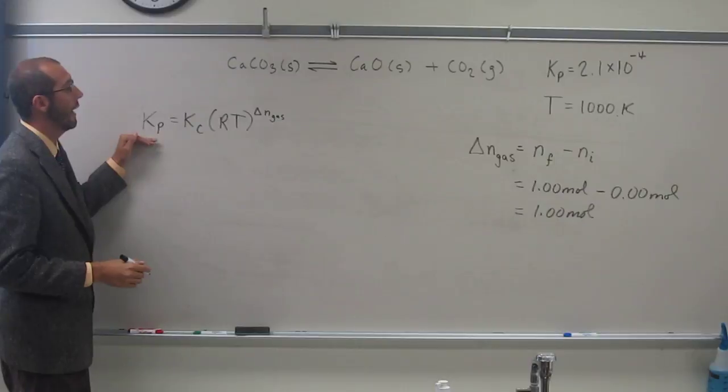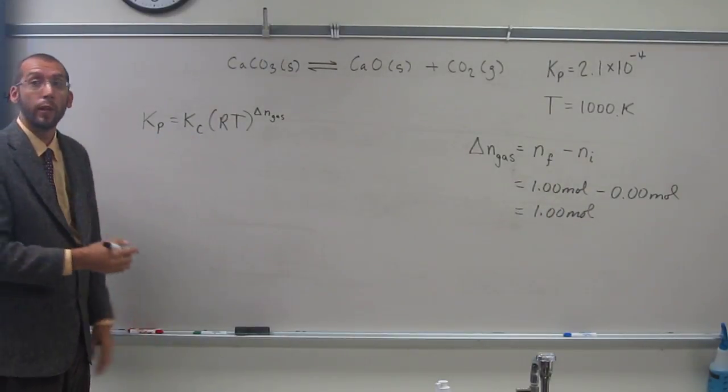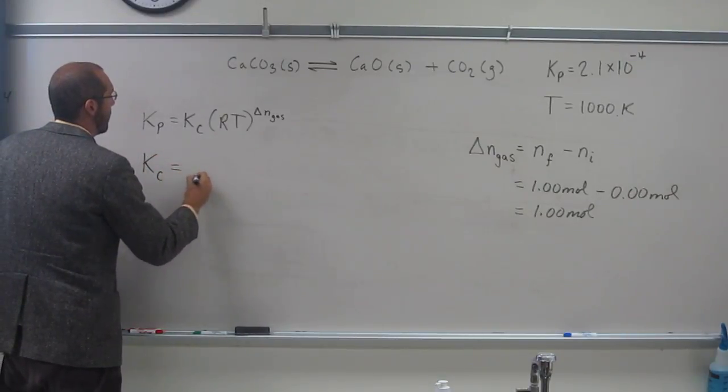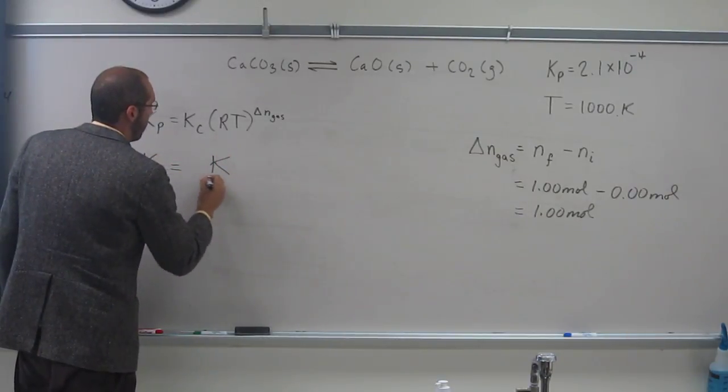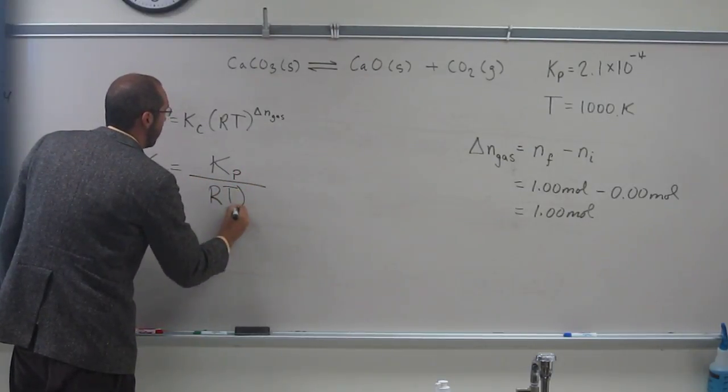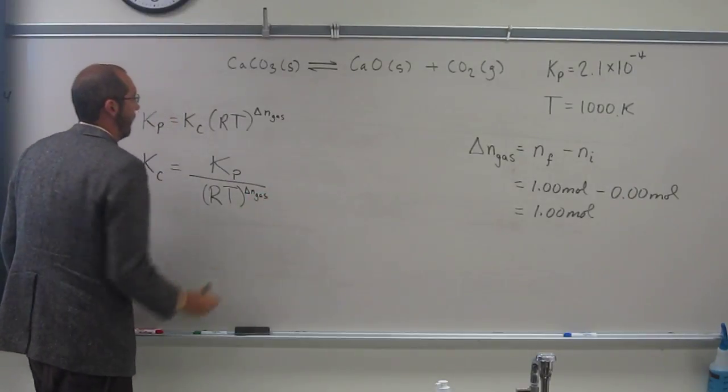So, we've got Kp and we're looking for Kc though, so we've got to rearrange this equation, let's isolate Kc. Kc equals Kp divided by RT raised to the change in number of moles of gas.